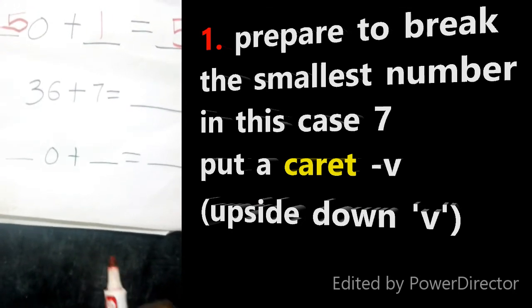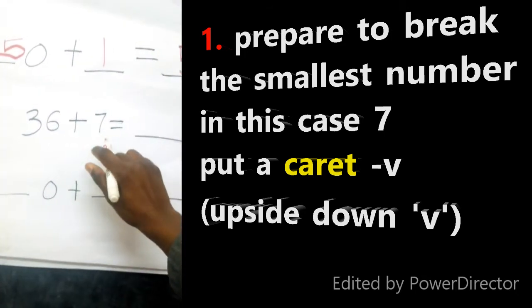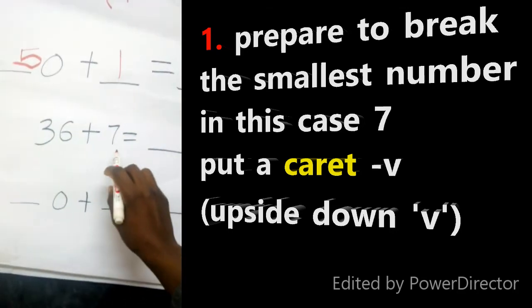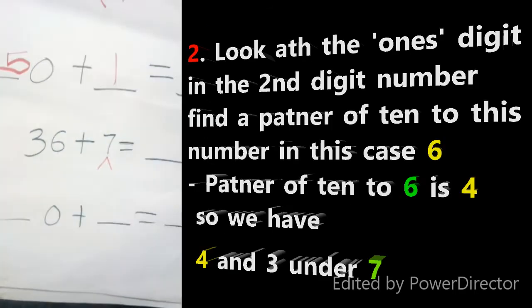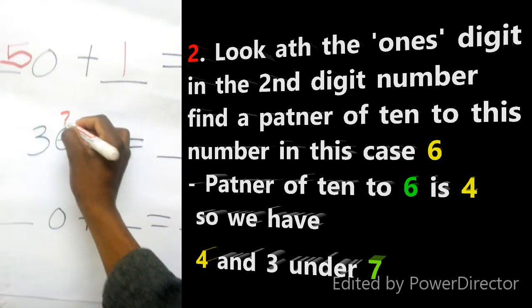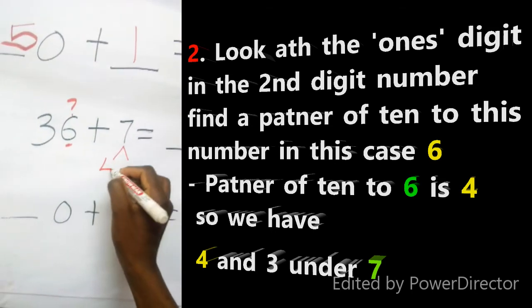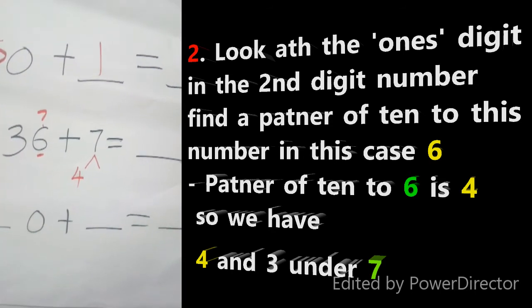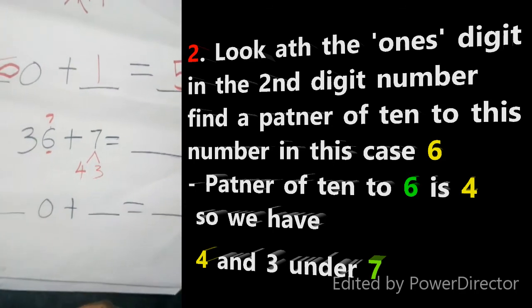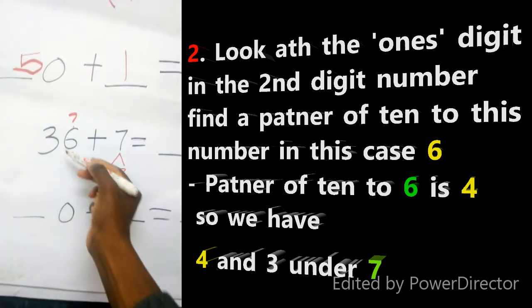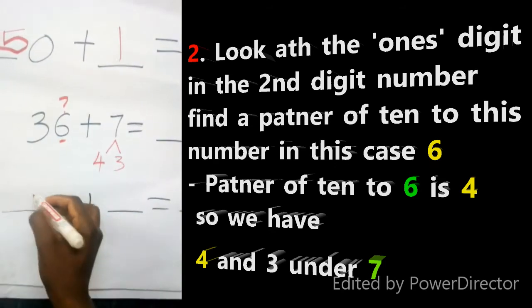Let us check out the last example. 36 added to 7. What will be the answer? 36 added to 7. What will we get? So, first of all, we have said, we put an inverted V right there. Then we ask ourselves, the partner of 10 to this number. Who is the partner of 10 to 6? Correct. It is 4. So, 4, we put 4 right there. Then we ask ourselves, what shall we add to 4 to get 7? The answer is 3. From here, we put together now this number with this one. And what shall we get? We will get 36 plus 4. That is simply 40.